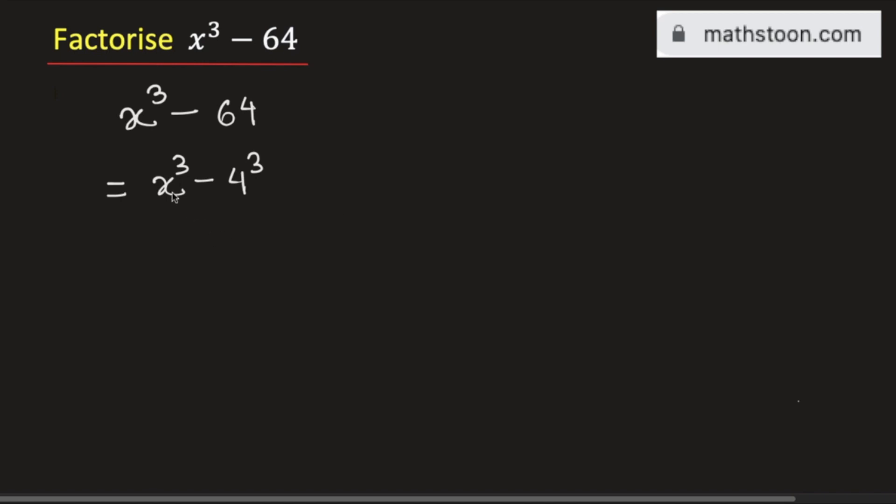Now look that it is in the form of a cube minus b cube. So, we will apply the formula of a cube minus b cube, which is equal to a minus b times a square plus ab plus b square.